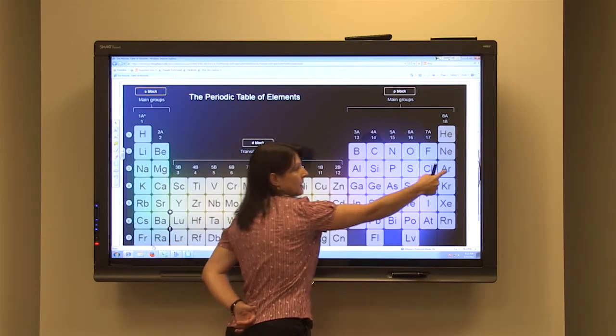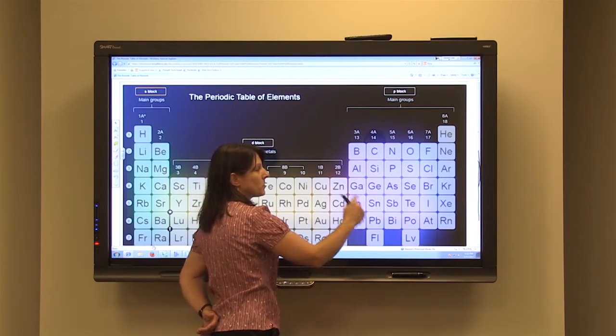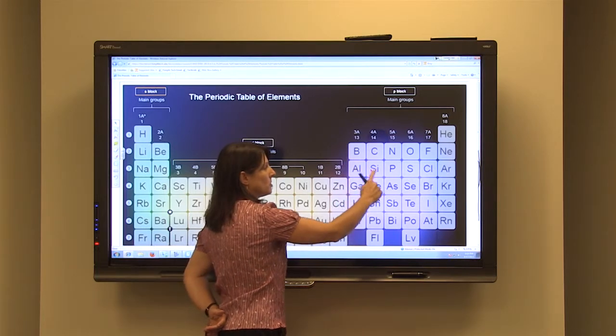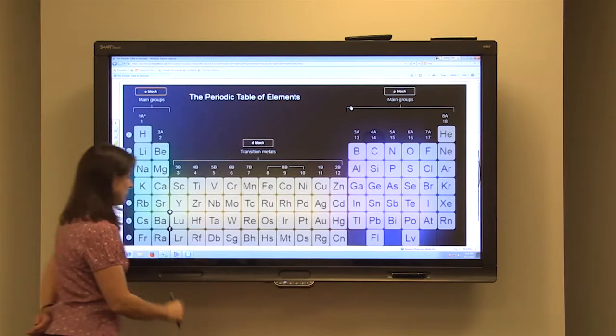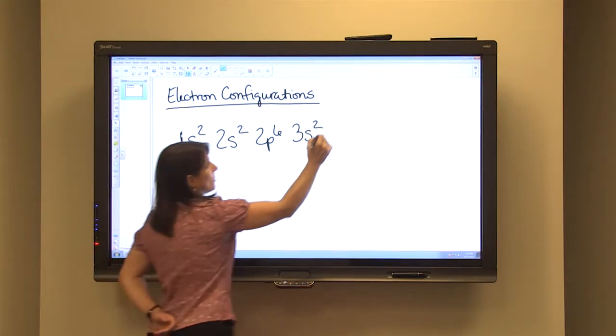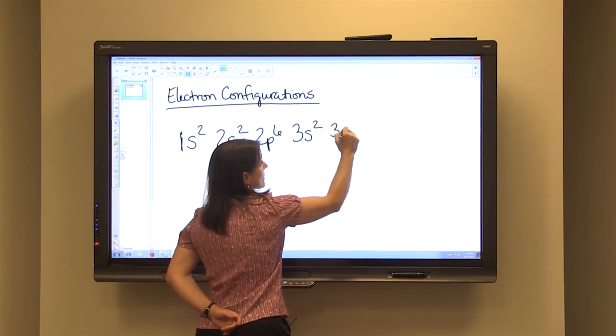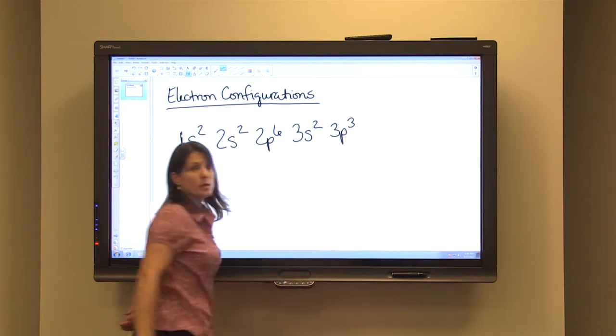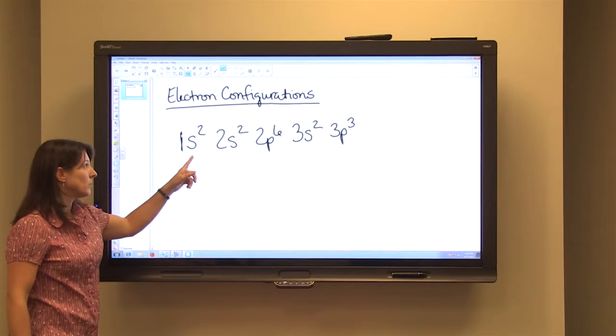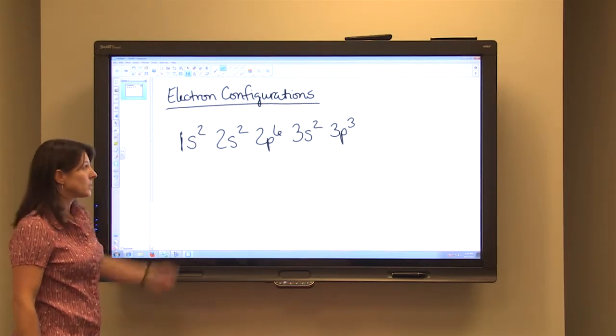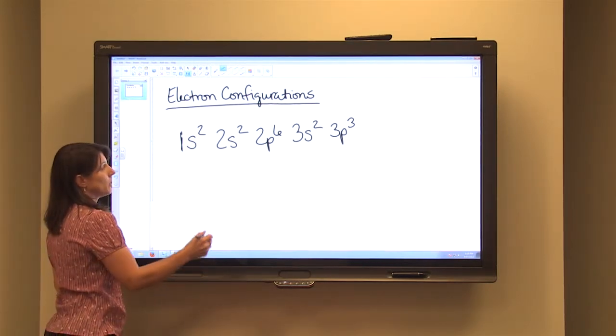Notice that phosphorus is not at the end of the sub-level, it's in the middle. So we're going to count across one, two, three. So phosphorus is the third element in. So there are only three electrons in the 3p sub-level. So this provides the energy level, sub-level, and the number of electrons in each energy level and sub-level.